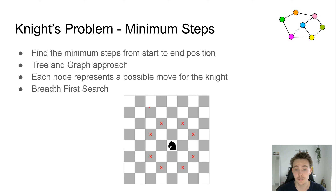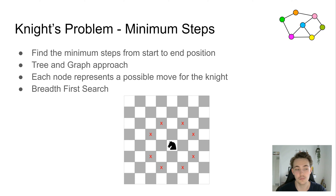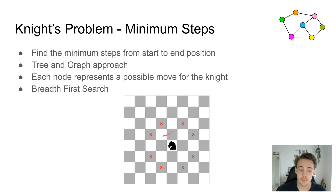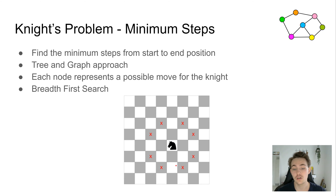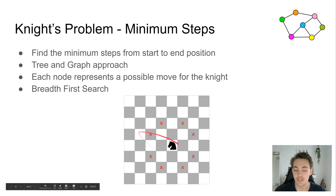We return the minimum steps it took for the knight to get to that position. We're going to implement it as a tree and graph approach. Each node in the tree represents a possible move for the knight. If the knight is at a given position, it can go two up and one to the left or right, or two steps to the left or right and one up or down — so the knight has eight possible moves if it's in the middle of the chessboard.